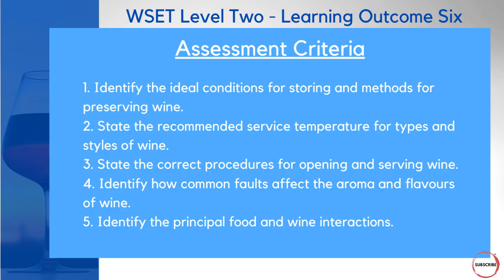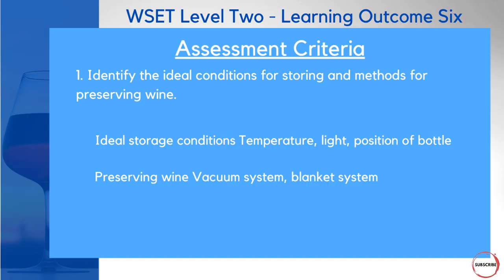You need to be able to identify the ideal conditions for storing and the methods for preserving wine. You need to be able to state the recommended service temperatures for the different types and styles of wine, state the correct procedures for opening and serving wine, identify common faults affecting the aroma and flavours of wine, and identify the principal food and wine interactions. Now, assessment criteria one is all about identifying the ideal conditions for storing and methods for preserving wine.